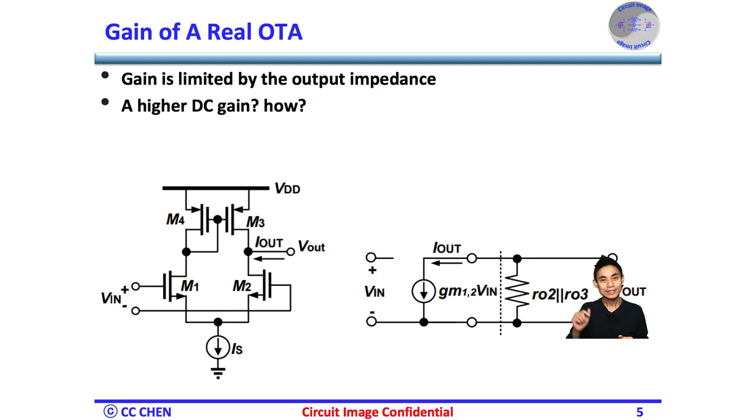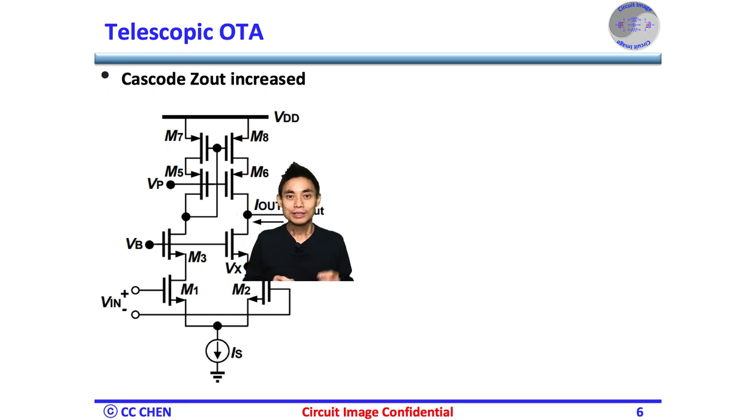Correct, either increase the Gm or the RO, but which one is more effective to boost the DC gain? Bingo! Increasing the Gm may require more current, which might cost more power if noise was low enough without wasting the power further. So, how do you increase the output impedance effectively? Right, we've shown the cascode current source design for a while, and you may know adding the cascode device will boost the impedance effectively and easily.